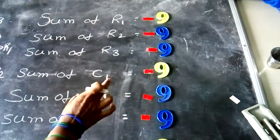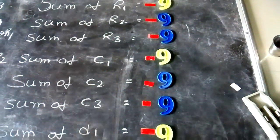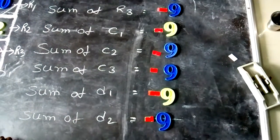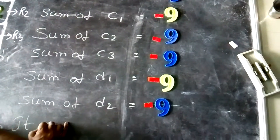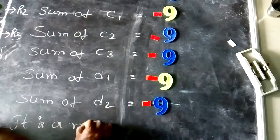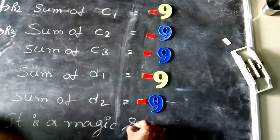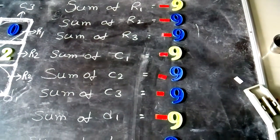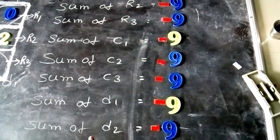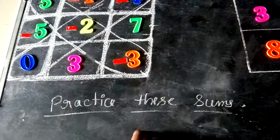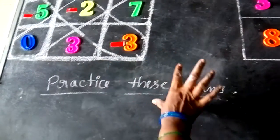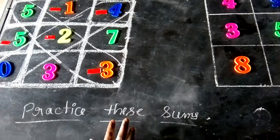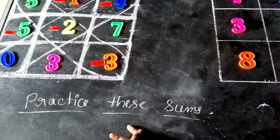Any row, column, and diagonal gives the same answer — minus 9. Therefore it is a magic square. If you don't get the same answer in any place, it is not a magic square. Now there are some more squares for you — I give two sums. You try to find out whether it is a magic square or not.